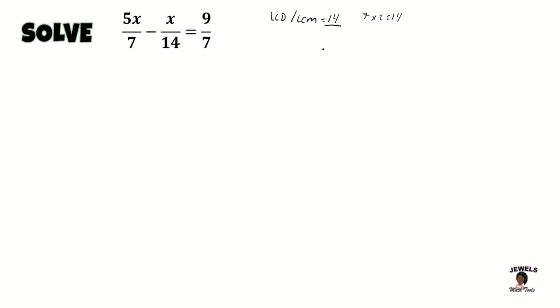So now that we have our LCM, we're now going to change all of our denominators in our fraction to 14. And we're going to do that by finding the fraction's equivalent form. So we're going to start with my first fraction, which is 5x over 7. Now to find the equivalent fraction of 5x over 7, we need to find what number that we multiply 7 by to give us 14.